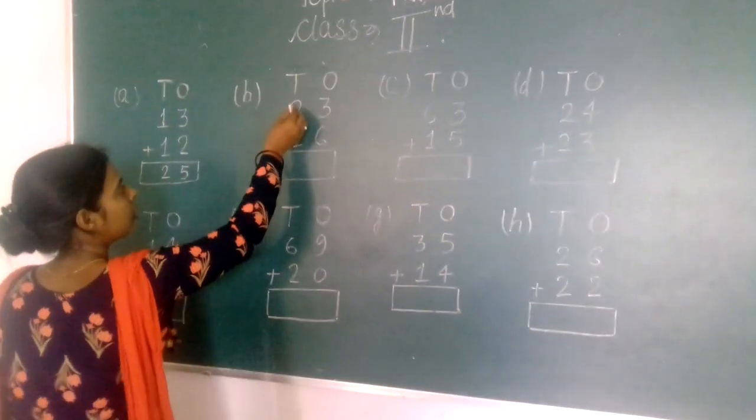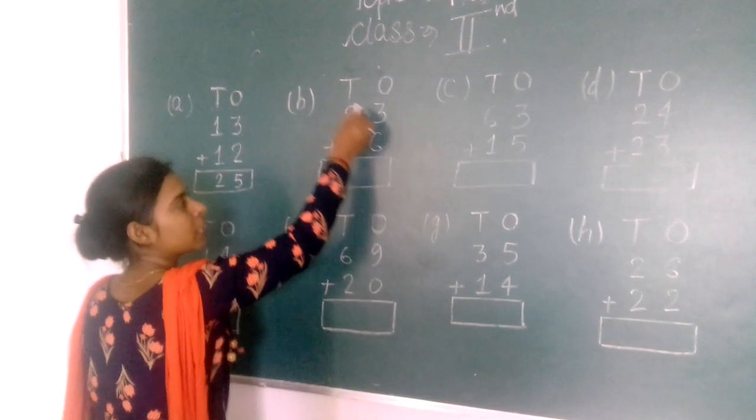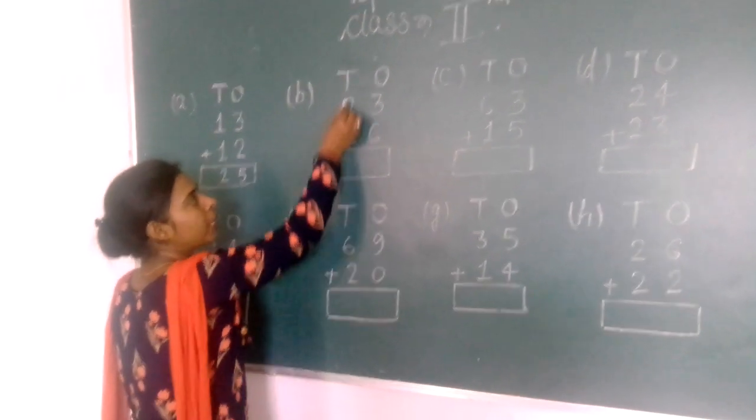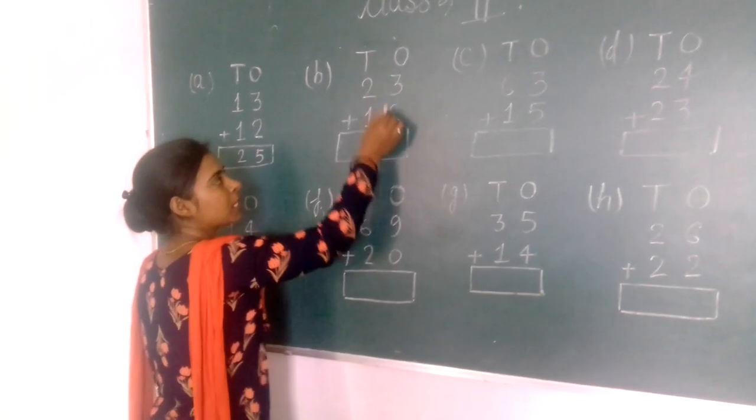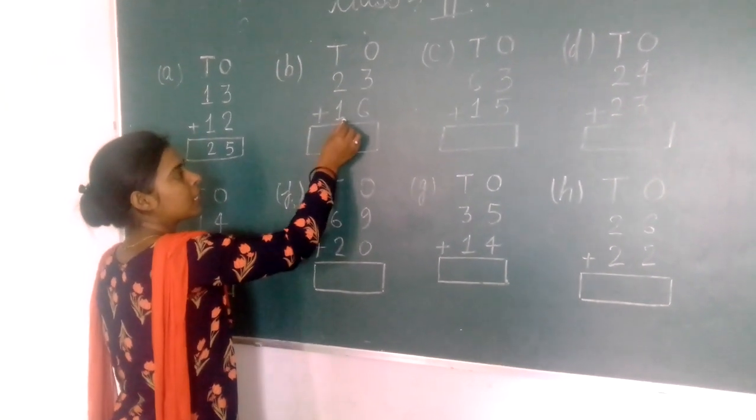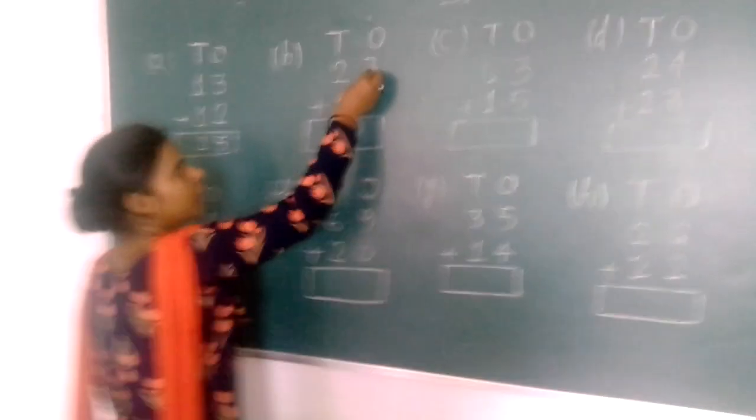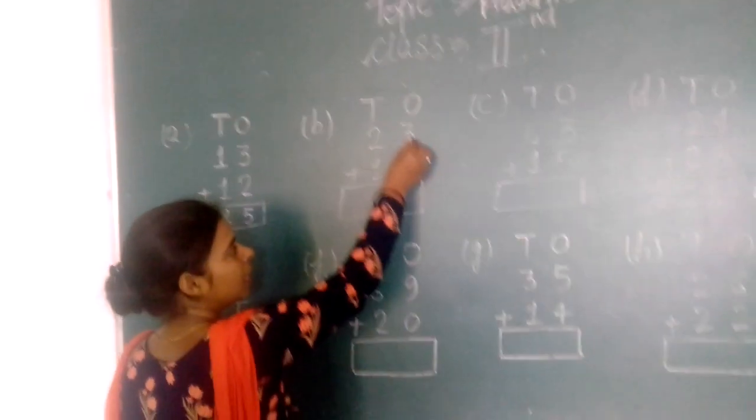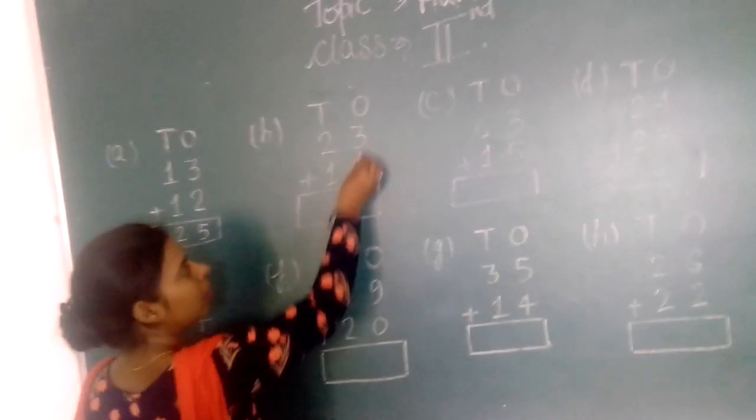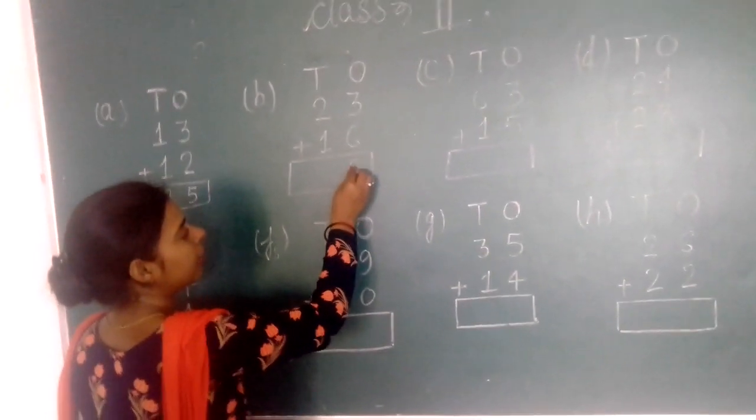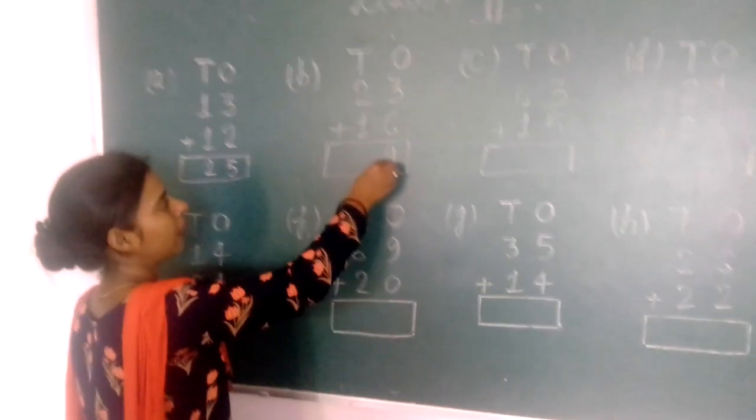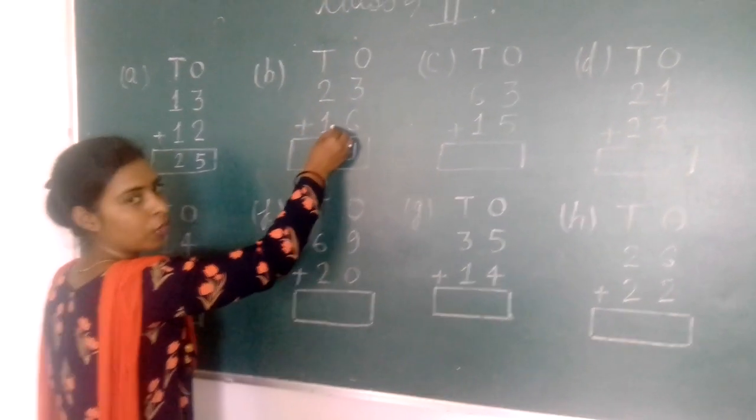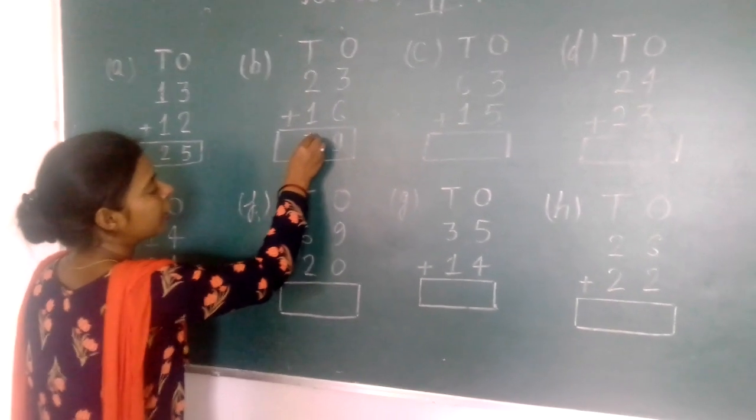Next: two tens, three ones (23) plus one ten, six ones (16). Twenty-three plus sixteen. Three ones plus six ones equals nine. Two tens plus one ten equals three tens.